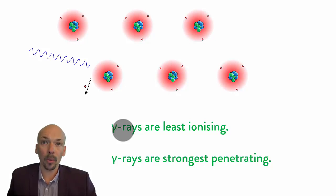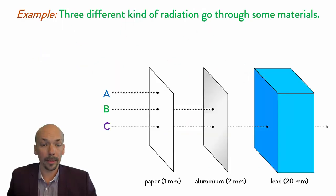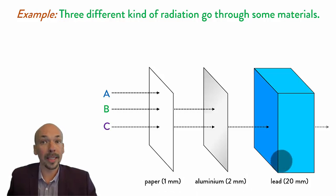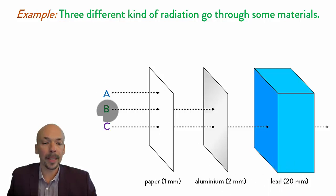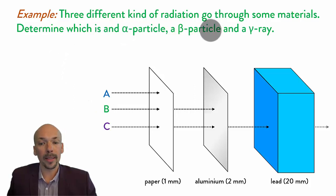I will now have two example questions to check if you understood. Three different kinds of radiation go through some materials: paper with a thickness of 1 mm, aluminum with a thickness of 2 mm, and lead with a thickness of 20 mm. We have radiation A, B, and C. Determine which is an alpha particle, which is a beta particle, and which is a gamma ray.